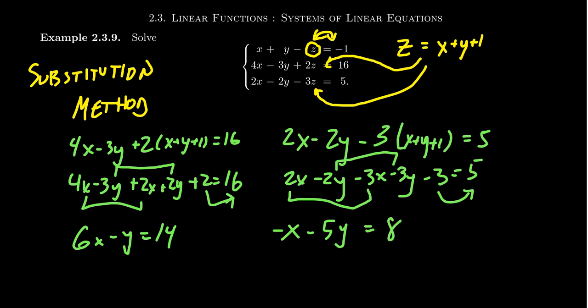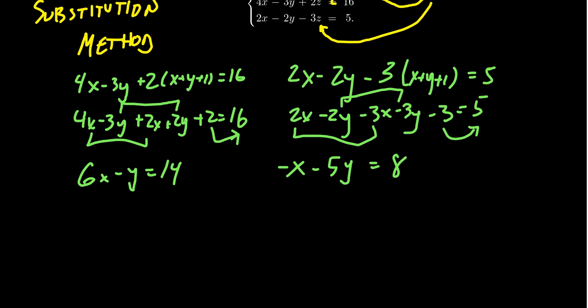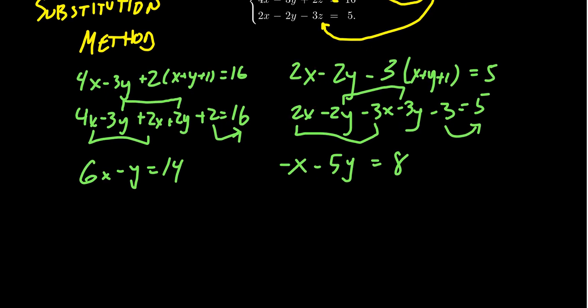And so now we have two equations that only involve x and y. So because of the substitution, z is now out of consideration. So we have 6x minus y equals 14, and we have negative x minus 5y equals 8. And so now we have this smaller system that's only two equations and two unknowns. We have to then solve this system using either elimination or substitution.